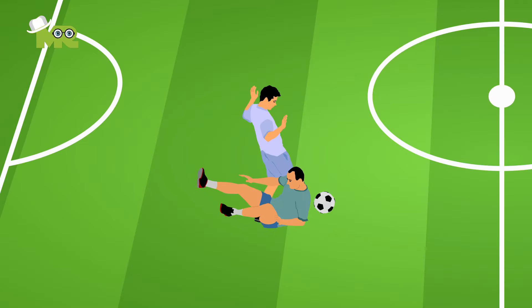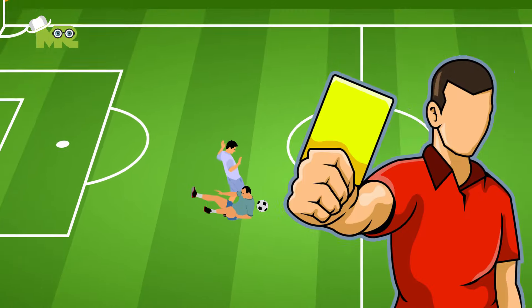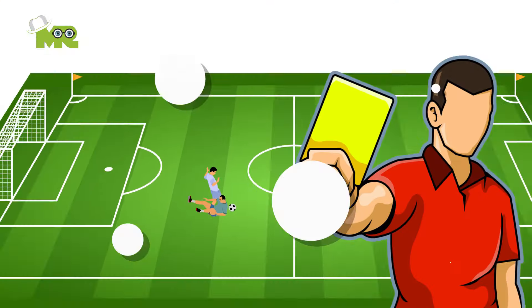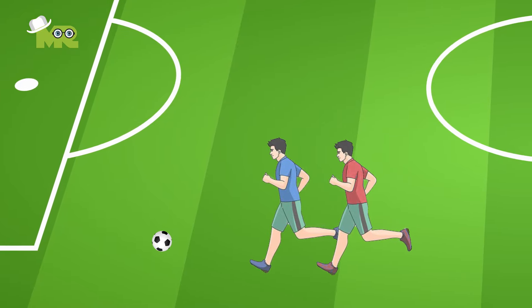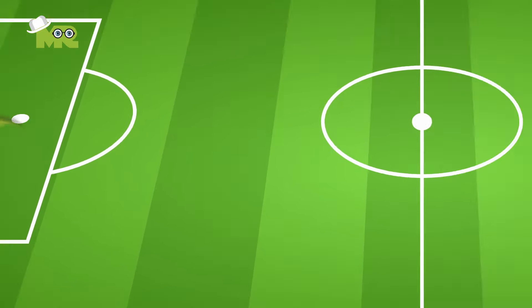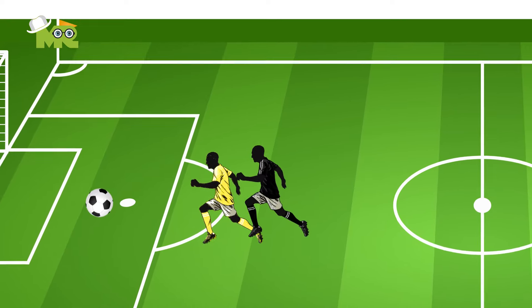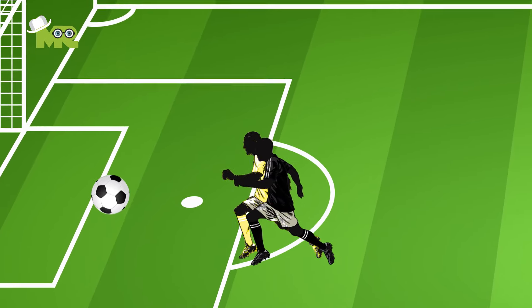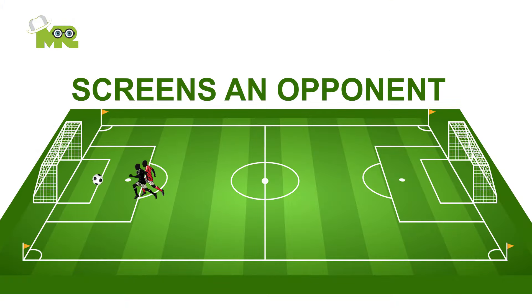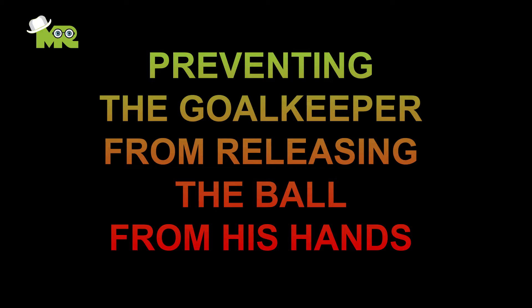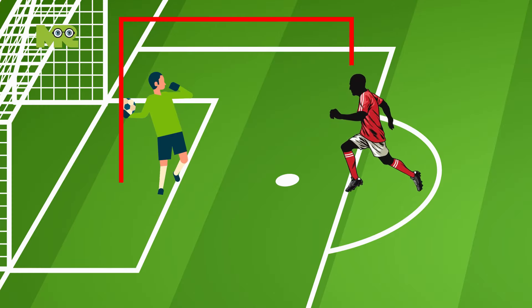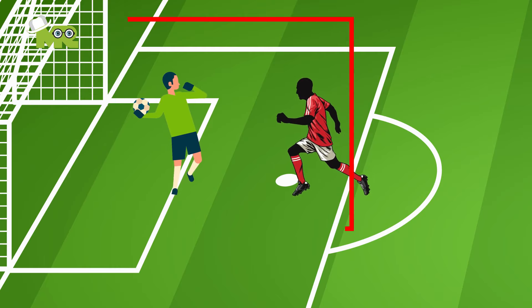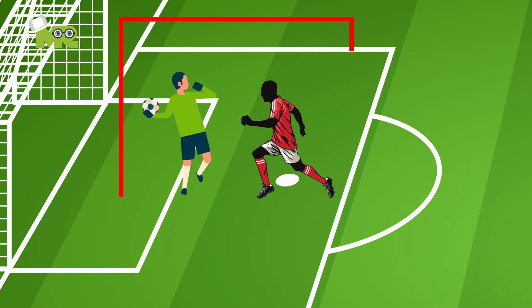1. Dangerous play — if a referee decides a player is playing recklessly and could be dangerous to other players, a foul is given. 2. Impeding the progress of an opponent — a player cannot use his body to impede another player's movements, even if it is not deliberate. This can be called when a player is not within playing distance of the ball (3 feet) and blocks or screens an opponent. 3. Preventing the goalkeeper from releasing the ball from his hands — a player who stands directly in front of the goalkeeper to prevent them from putting the ball into play is given this foul.